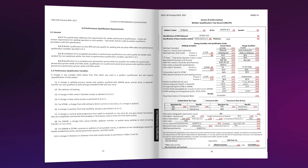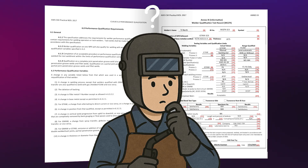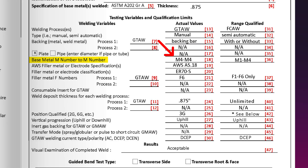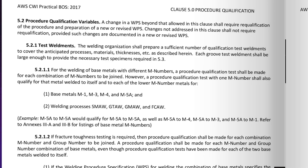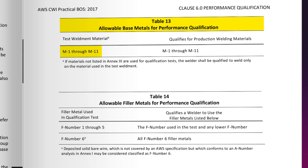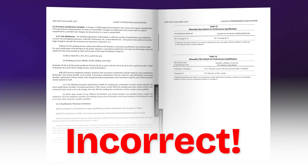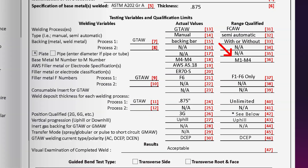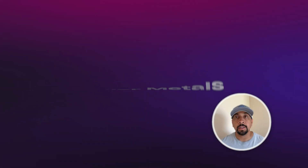The base metals section gets a lot of people if you don't comprehend the question or look in the wrong location. On Line 18, the actual values list that the welder qualified with an M4 base metal, and Line 36 states he is qualified to weld on M1 through M4. If this were a procedure qualification question, that would be correct. However, since we're talking about performance, per Table 13, if the welder qualifies on any M1 through M11 material, he is qualified for production on the full M1 through M11. So the range listed is incorrect — the correct range is M1 through M11.